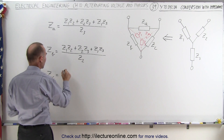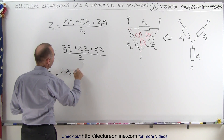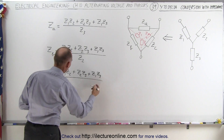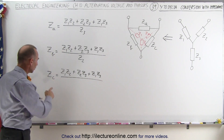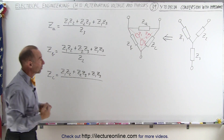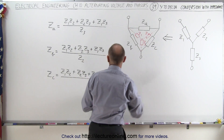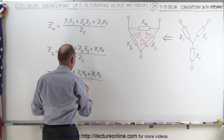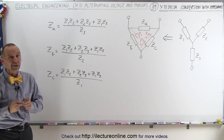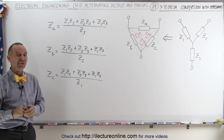And finally, ZC can be found by taking the same numerator: Z1 times Z2 plus Z2 times Z3 plus Z1 times Z3. Notice the numerator never changes, just the denominator. We're looking for the impedance directly across ZC, so the one directly across would be Z1. And this is how we go from the Y to the delta, just in case you want to know how to do that.